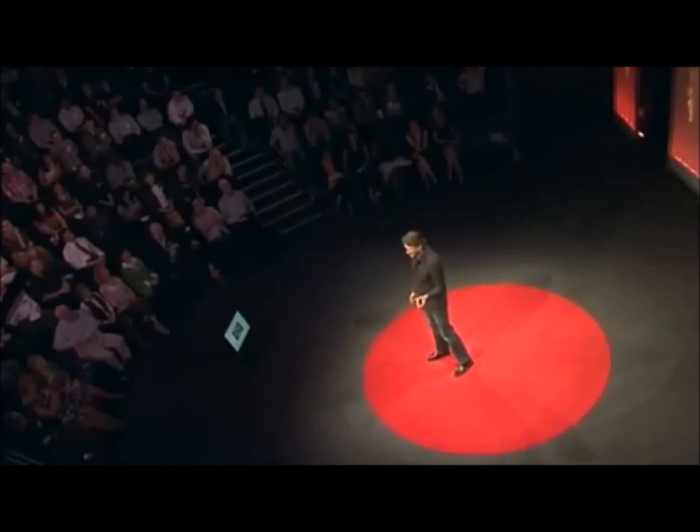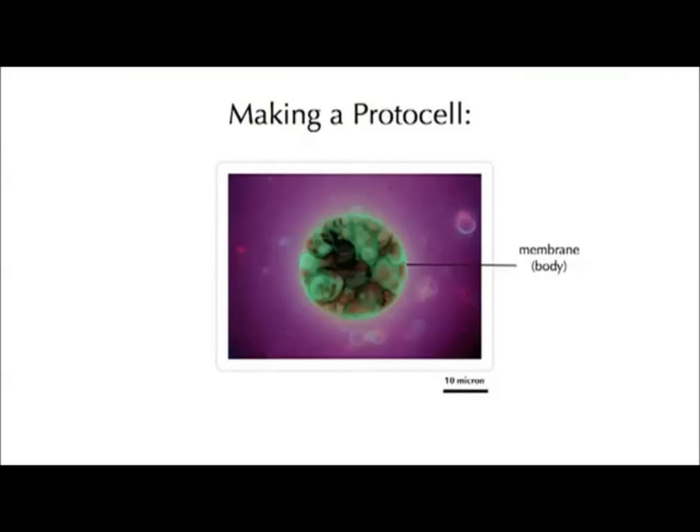This is how we can start to make a protocell. We use the idea called self-assembly: mix some chemicals together in a test tube and these chemicals will start to self-associate to form larger and larger structures — on the order of tens of thousands to hundreds of thousands of molecules coming together to form a large structure that didn't exist before.